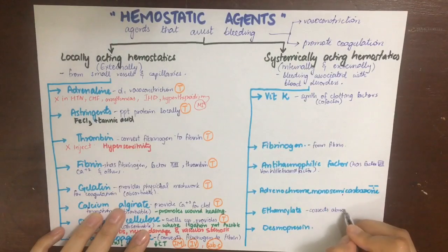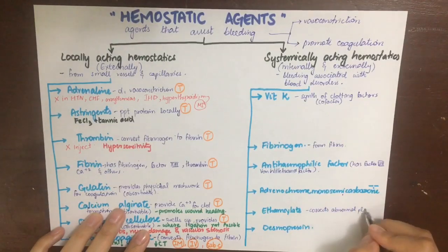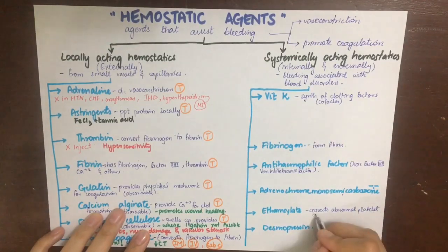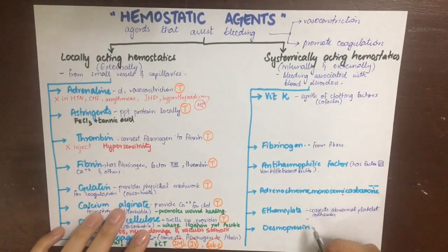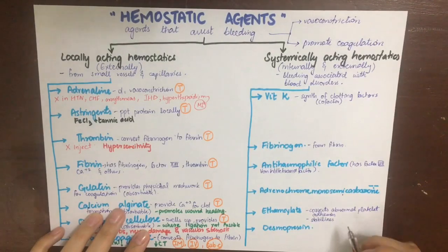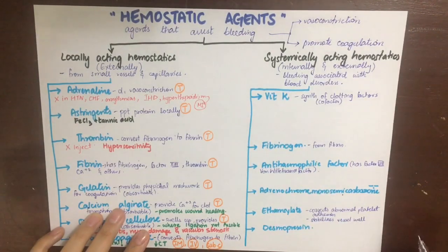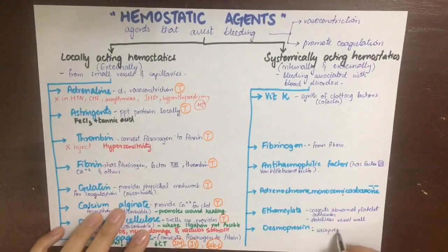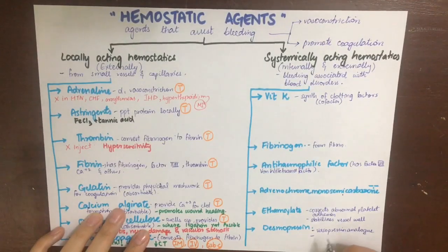Adrenochrome mono-semicarbazone's mechanism is not clear. Ethamsylate will correct abnormal platelet adhesion and stabilize the vessel wall. Desmopressin is a vasopressin analog and thus acts as a vasoconstrictor.